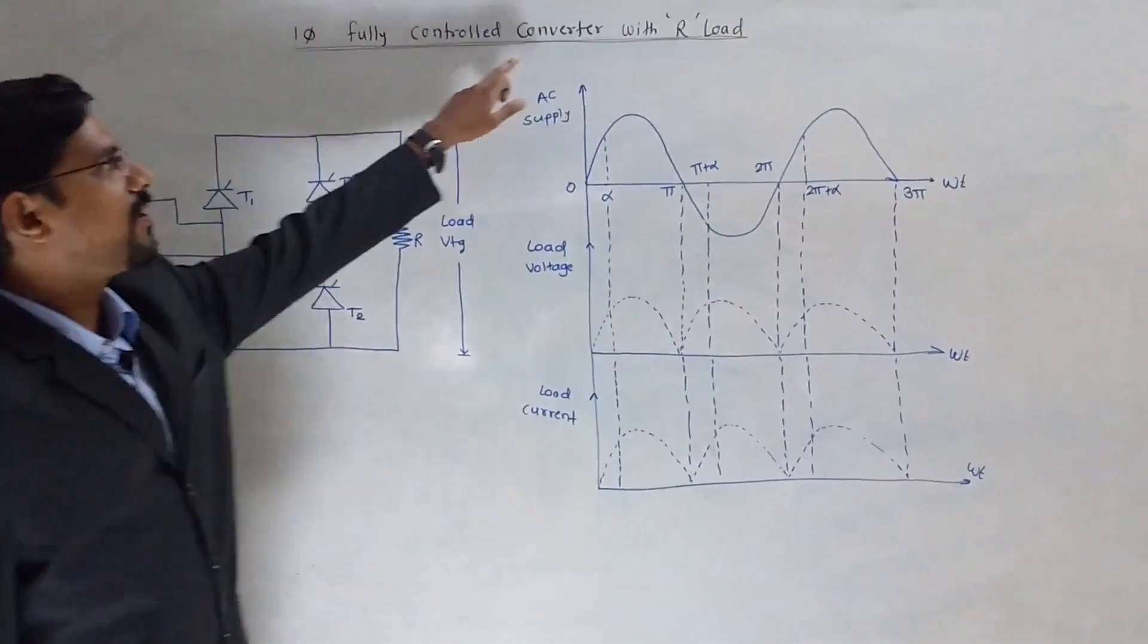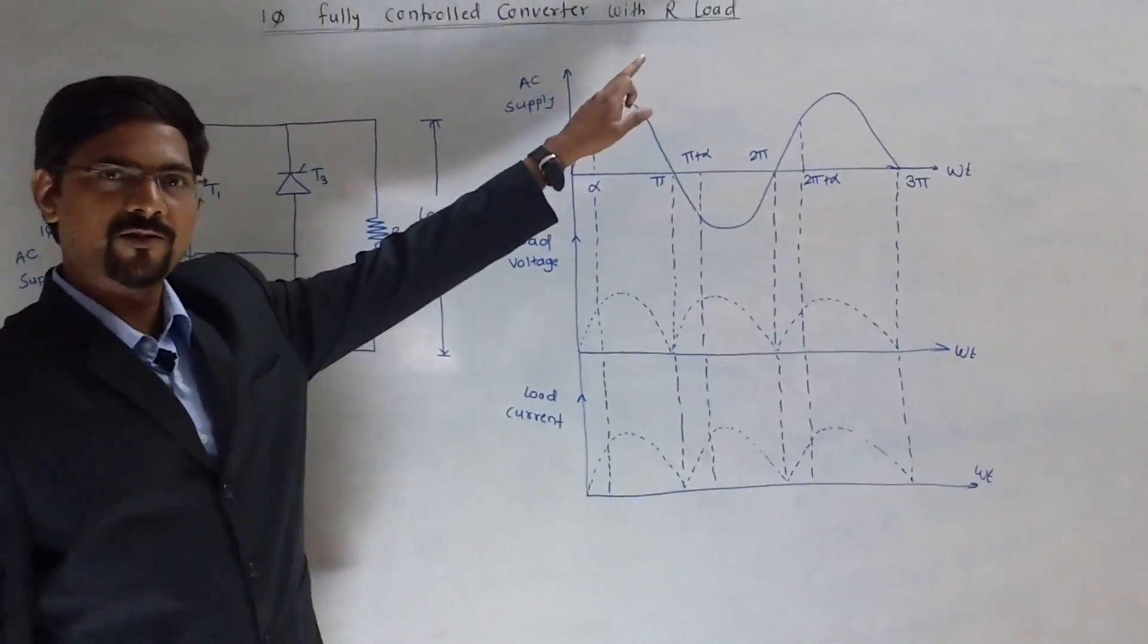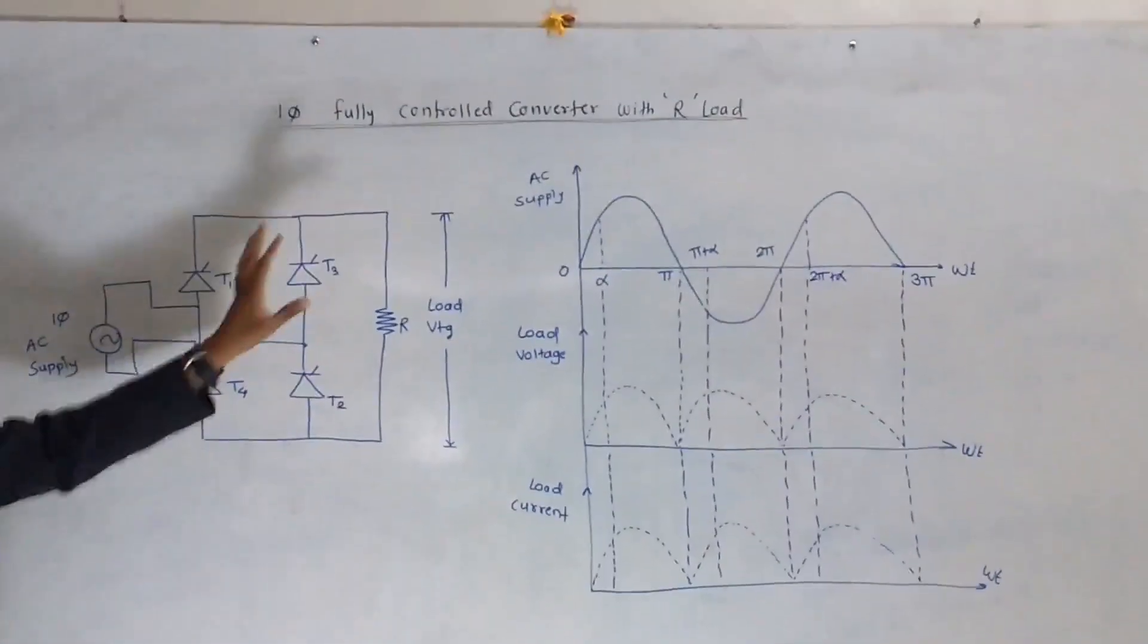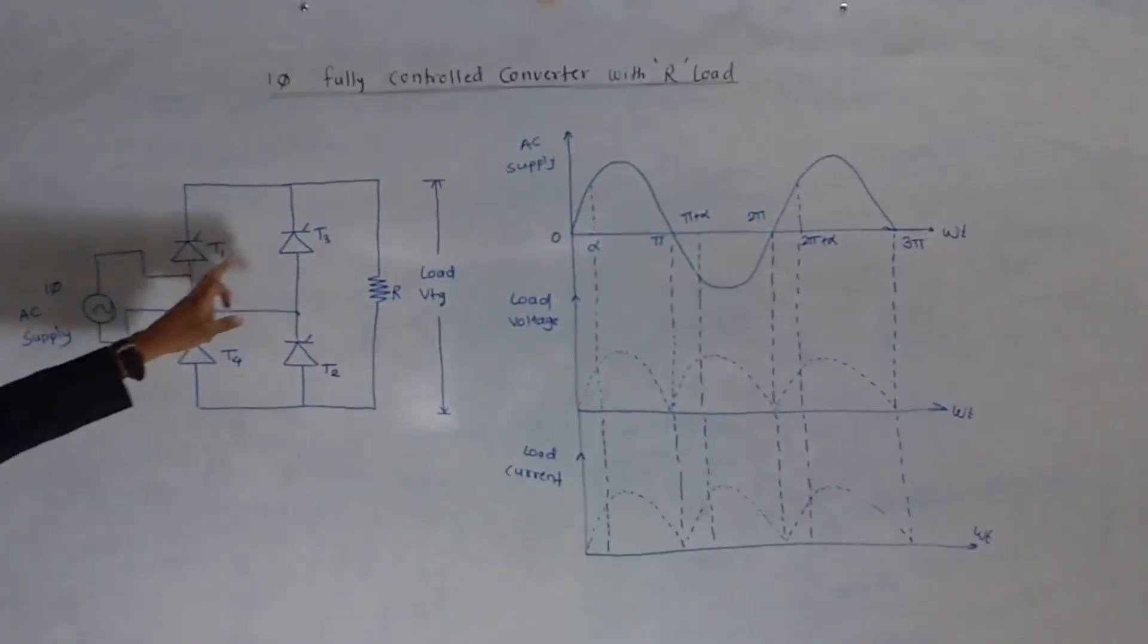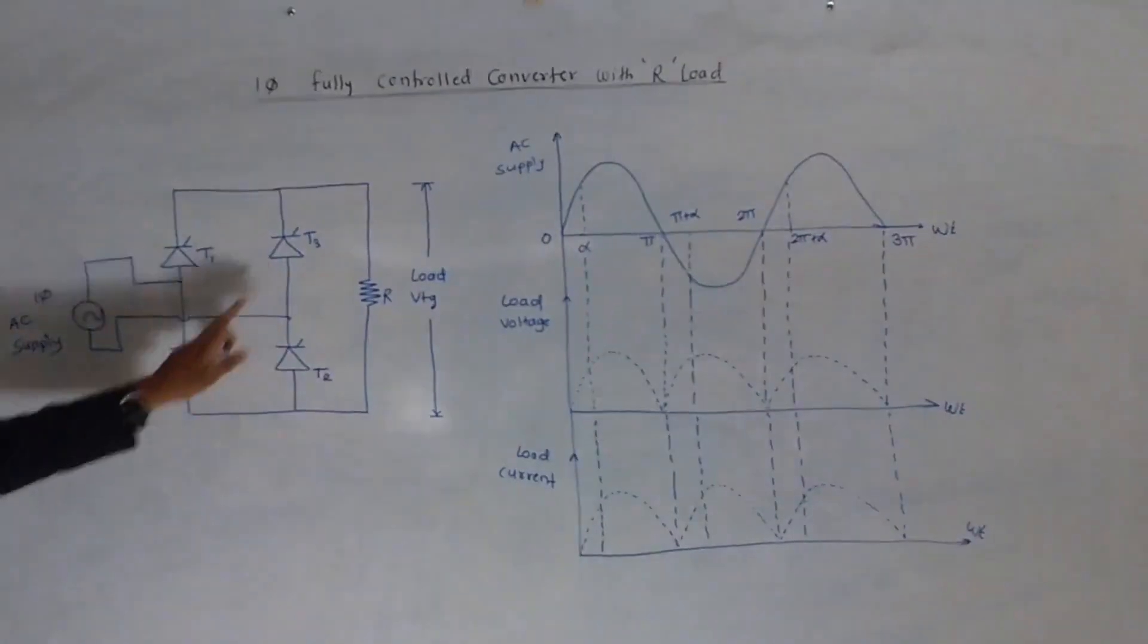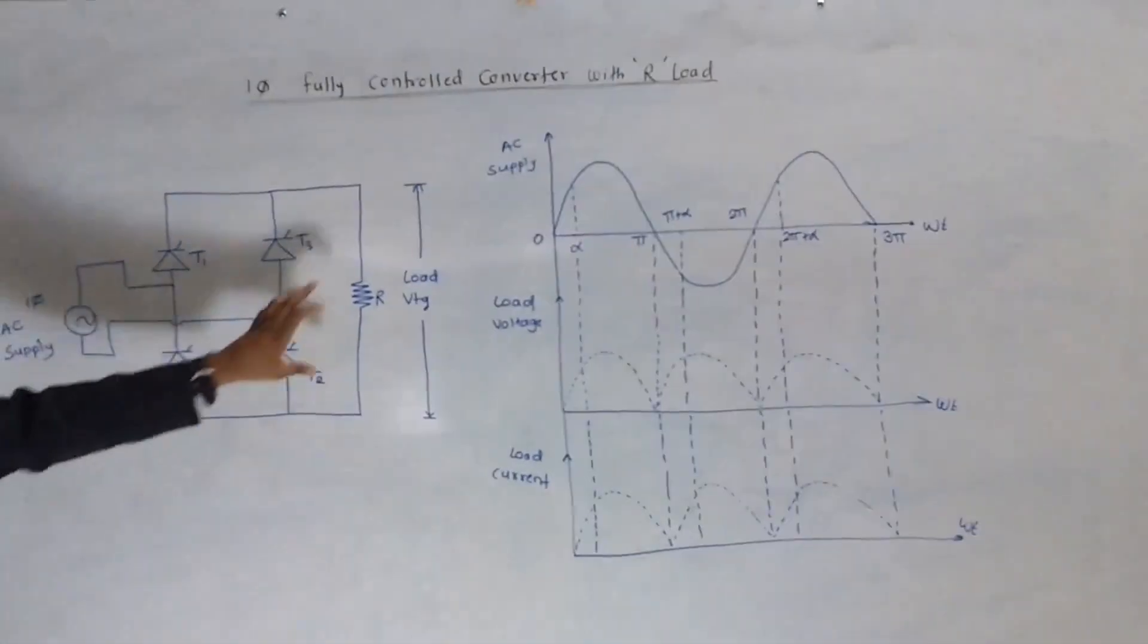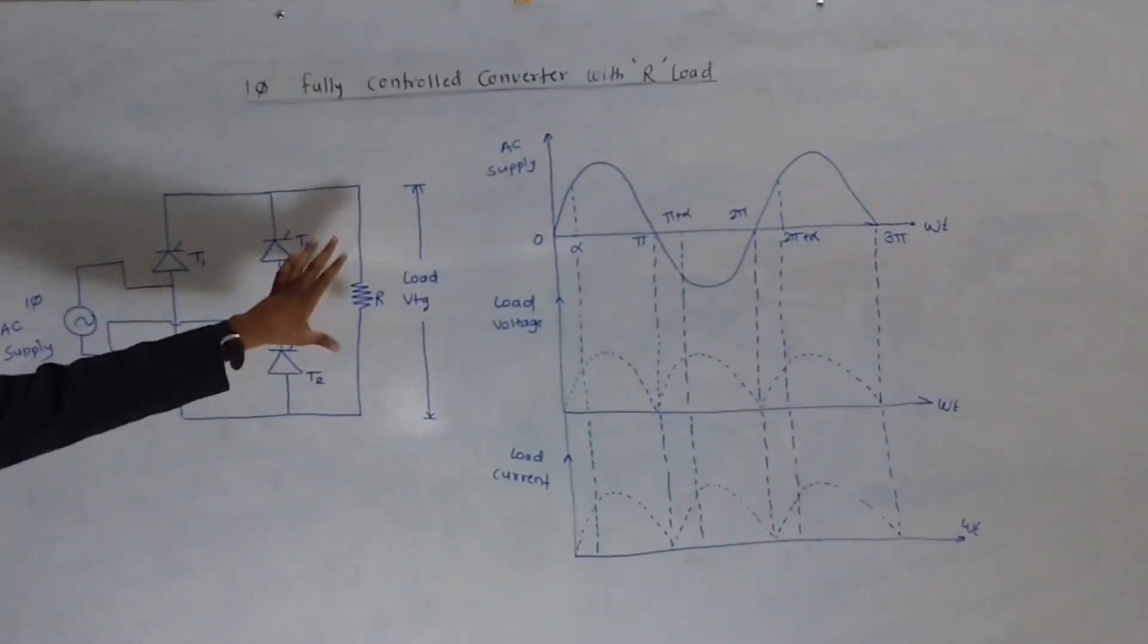Single-phase fully controlled converter with R-load we are going to study. This is the diagram for this converter. We have used 4 SCRs, T1, T2, T3 and T4 and we have connected R-load at the output side of this converter.